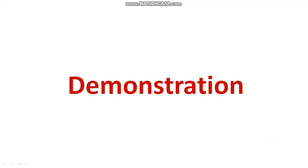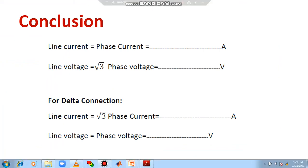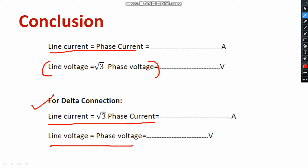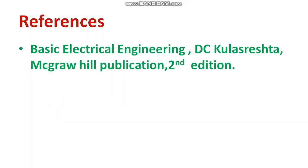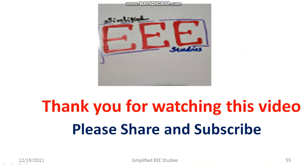We have done the demonstration. Finally, we will learn the relation between star and delta connection. In case of star connection, line current and phase current will be equal, and line voltage is equal to root 3 times phase voltage. In case of delta connection, line current is equal to root 3 into phase current, but line voltage and phase voltage will be equal. If you have any queries, you can put them in the comment box. Thank you for watching this video — please share and subscribe.